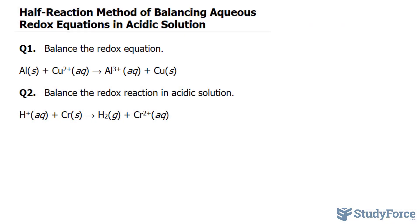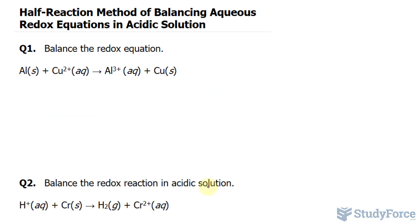The first thing that we want to do is assign oxidation states to all the atoms and identify the substances being oxidized and reduced. Let's begin with aluminum. Notice that aluminum is a solid, so its oxidation state is zero, and so is this one.